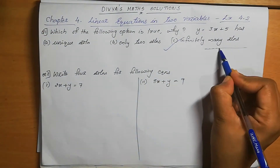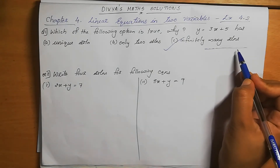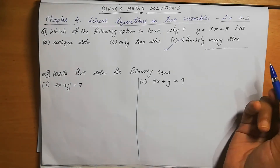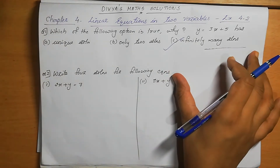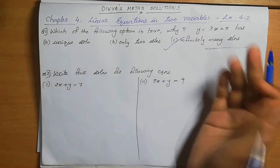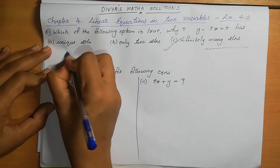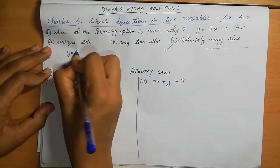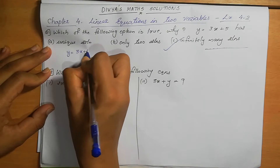Each one is a point. So, infinitely many points on a line means each point is a solution of the linear equation. That is the reason. We can check: the equation is y equal to 3x plus 5.